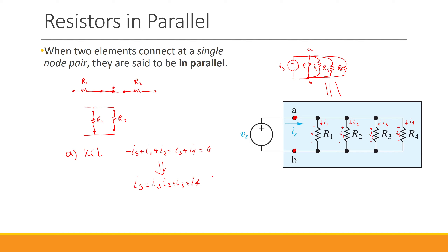This is our first conclusion: whatever current the voltage source provides gets divided between these four resistors. But we still cannot say anything about the exact values of these four individual currents.